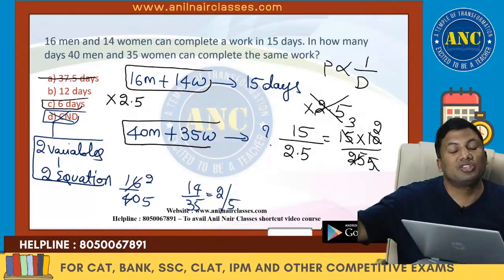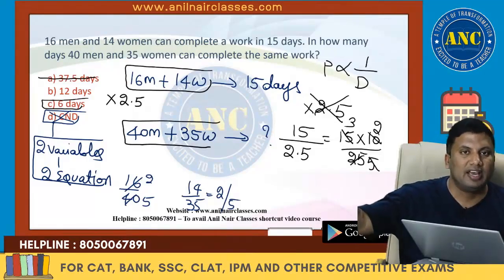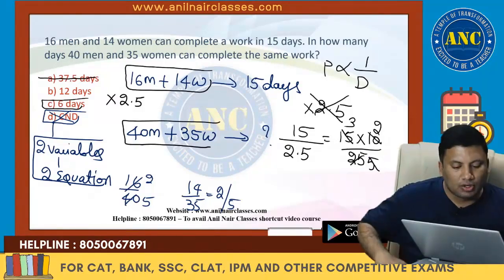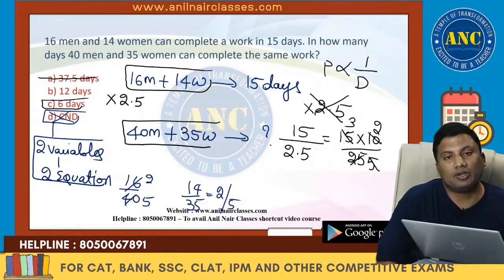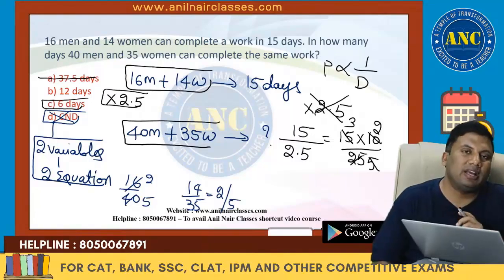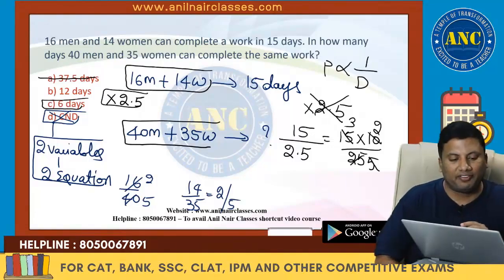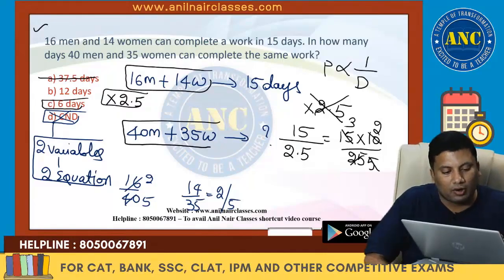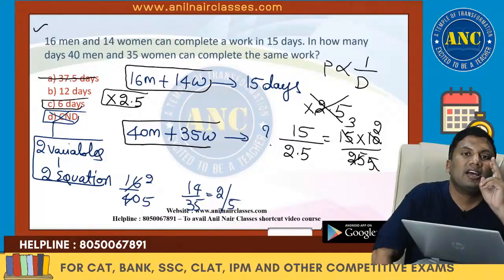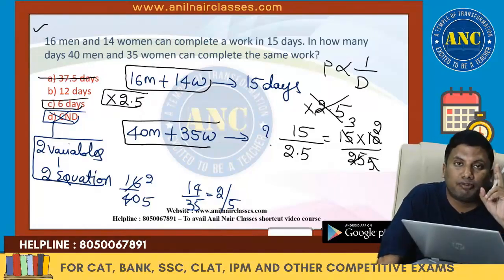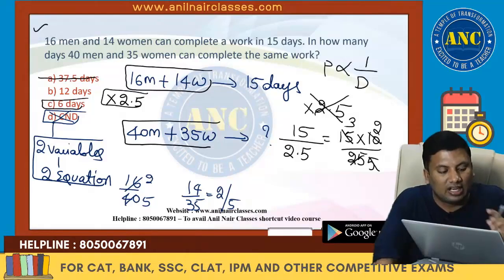Before solving, check the ratios of the coefficients of the elements given in the question. Here 16:40 = 2:5 and 14:35 = 2:5 — ratio is the same, so the multiplication factor is 40 ÷ 16 = 2.5. People and days are inversely proportional: people 2 times → days half; people 4 times → days 1/4.